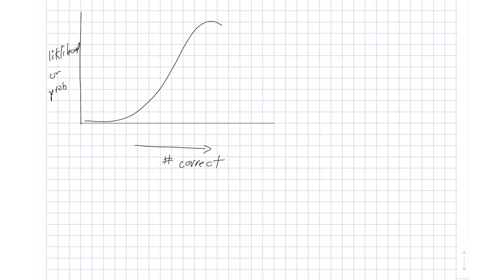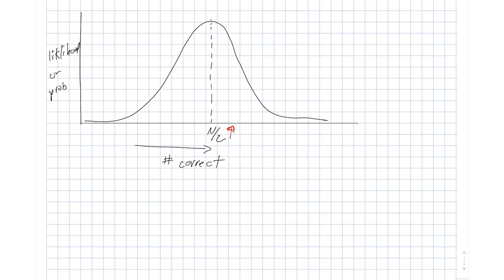The likelihood looks like a Gaussian, centered, with the mean of this distribution sitting right at n/2. Now if the broker gives us a set of answers that scores a little bit higher than n/2, then we can't really tell the difference between whether the stockbroker knows what they're doing or whether they're just making random guesses. However, if we push this observation further out to a certain region, then we start to get to a point where this is a really unlikely scenario under the null hypothesis.